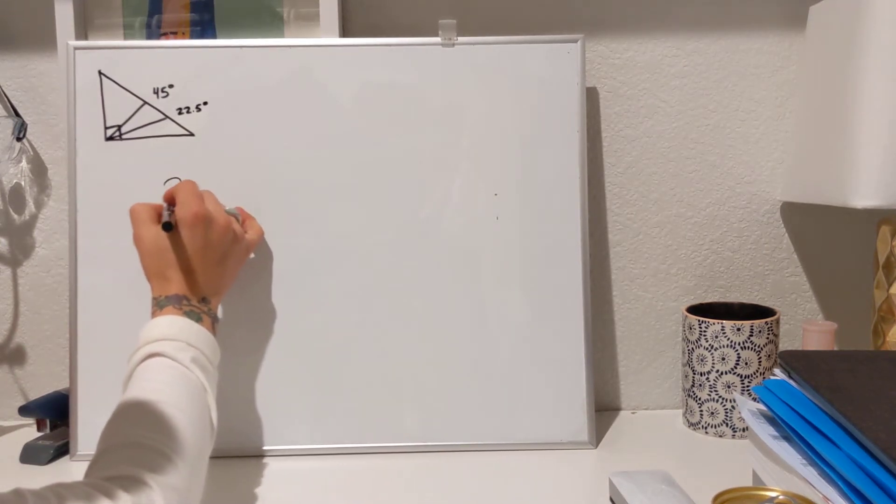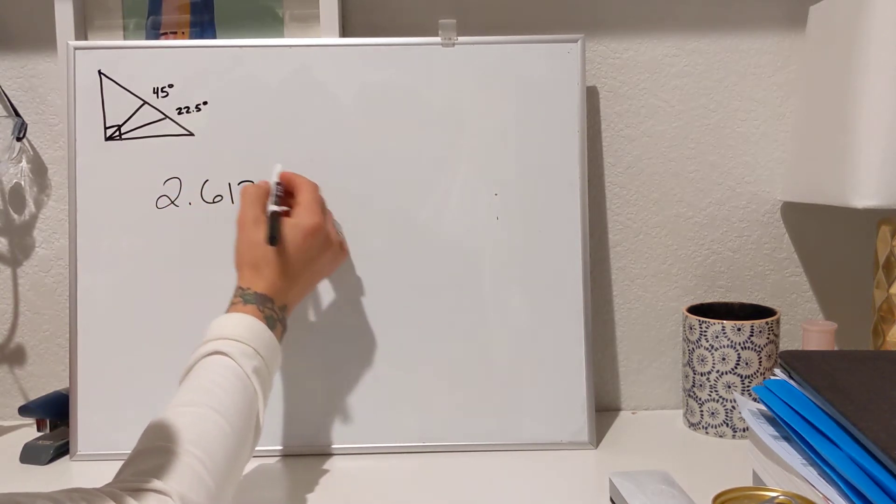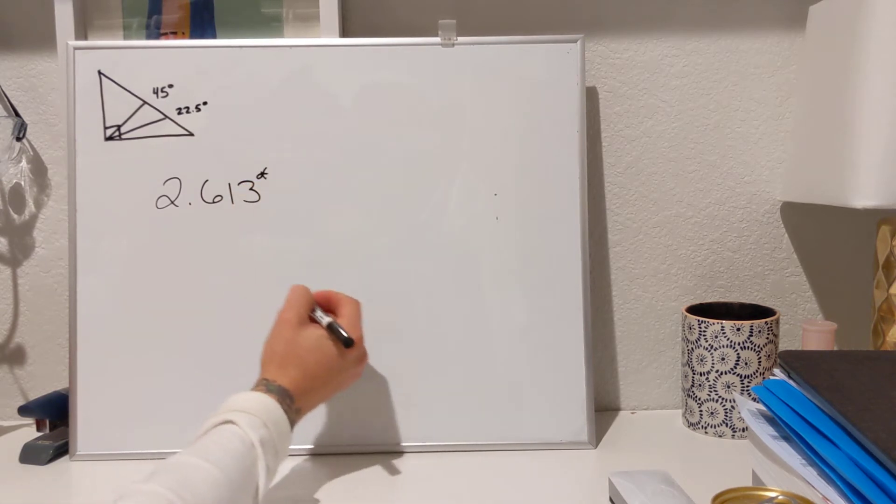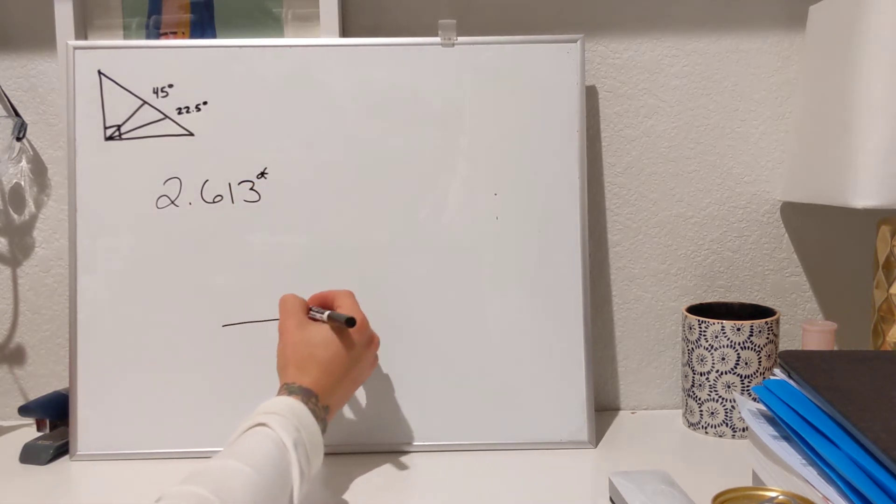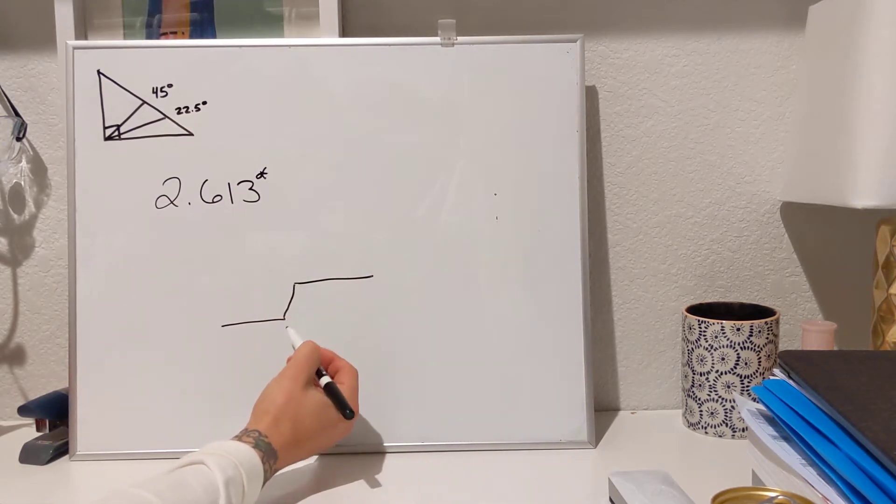So a 22 offset, your formula is going to be 2.613. That is the magic number. So say you have an offset that comes here and it comes here and it comes here. You have to find out that distance.